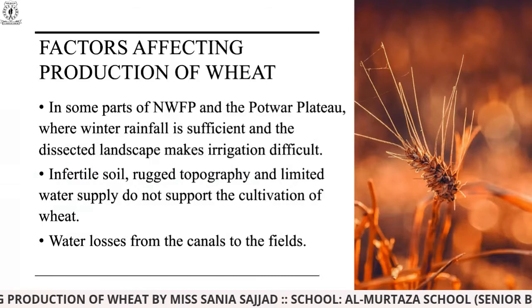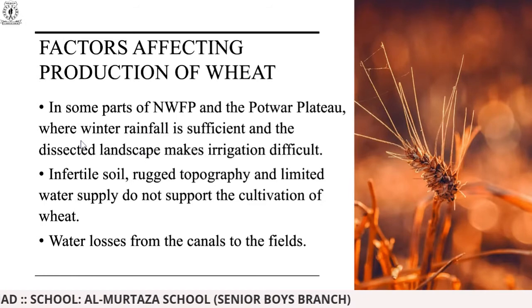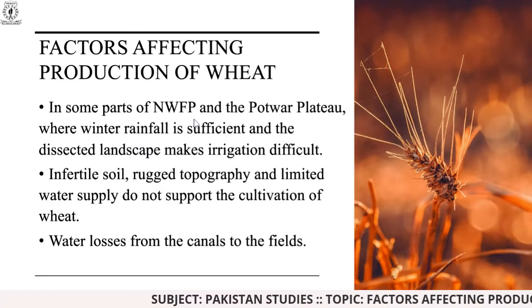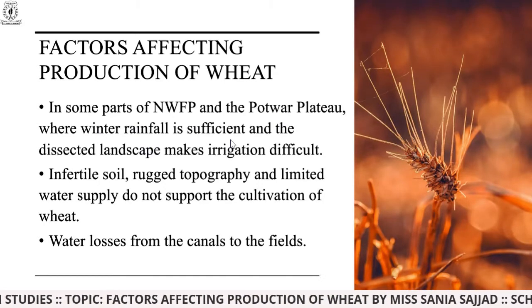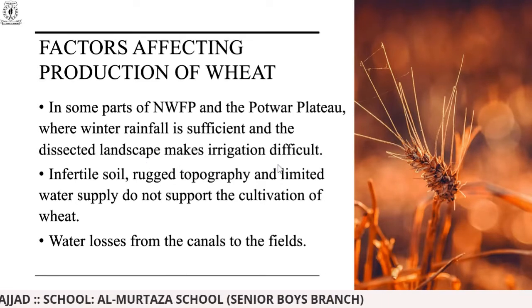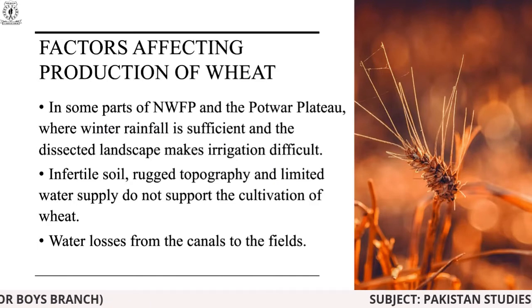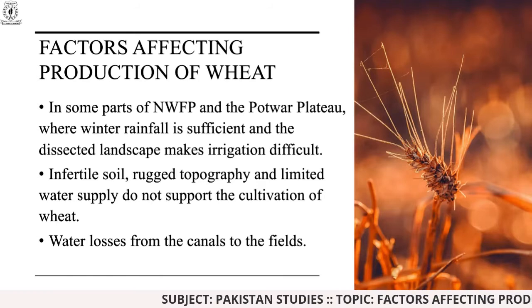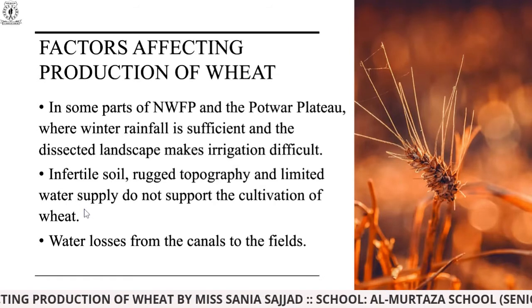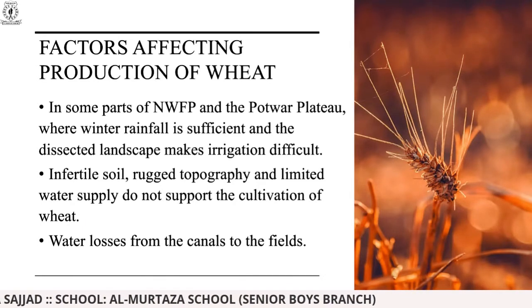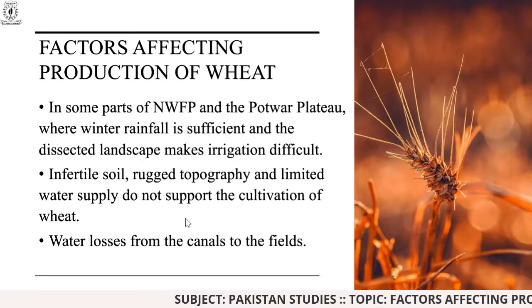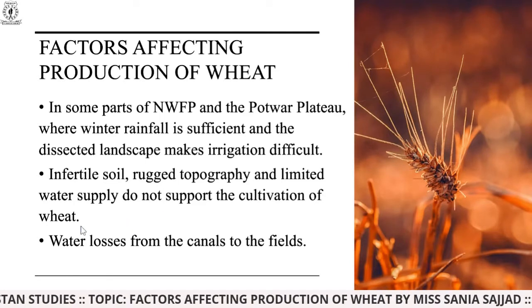Starting with factors affecting production of wheat: in some parts of NWFP, that is the North West Frontier Province, and the Pothohar Plateau, where winter rainfall is sufficient but not in great amounts, the dissected landscape makes irrigation difficult. It makes irrigation nearly impossible in those areas during winters. Infertile soil, rough topography, and limited water supply do not support the cultivation of wheat because irrigation is improper, the soil is infertile, and there is limited water supply.